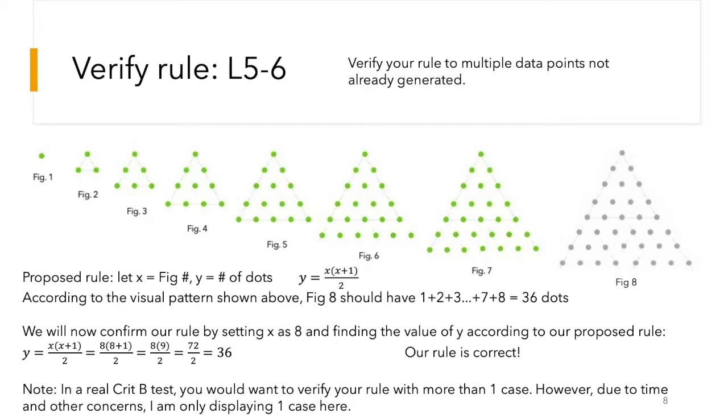Now we're going to verify that rule, and this is very important because it really proves that your rule works. A good way to do that is by continuing your pattern and seeing whether your rule fits that continuation. So right after figure 7 comes figure 8. I've drawn figure 8 using that continuous pattern. And let's just count the dots. There's 36 of them, right? You can just count them. What we want to do is we want to use our rule and plug in the value of 8 into x, so x equals 8. And with that, figure out what y is according to our rule. And then see if that y is equal to 36. If it is, then your rule is correct. And we realize that it is. So our rule is probably correct. But in a real Crit B test, you would want to verify your rule with more than one case. But due to time concerns, I'm only displaying one case here.